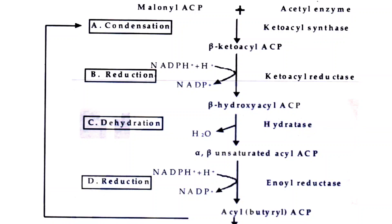The 6-carbon fatty acid is transferred from ACP to the cysteine sulfhydryl group, again making ACP vacant, and the third molecule of malonyl-CoA binds to the vacant ACP. The sequence of four reactions is repeated, producing an 8-carbon fatty acid. This cycle continues — the 8-carbon fatty acid moves to cysteine, a fourth malonyl-CoA binds ACP, and reactions repeat. Elongation continues, adding 2 carbons per cycle, until a 16-carbon fatty acid is formed attached to ACP.